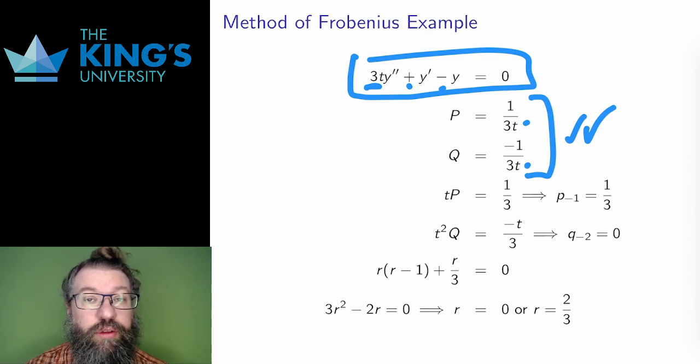I don't need to repeat all the setup. I can just move to the indicial equation. I need the two coefficients. Here are the functions t times p and t² times q. The limit of t times p at t equals 0 is the coefficient p₋₁, which here is 1/3.